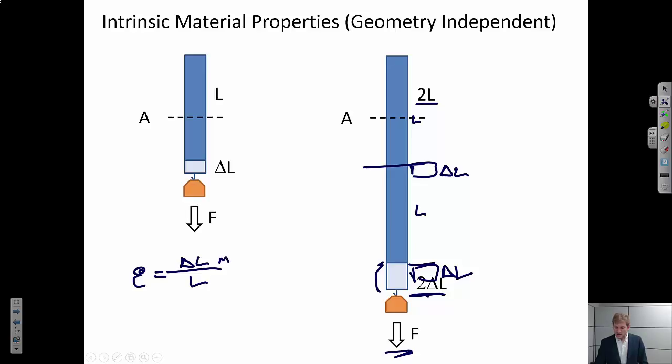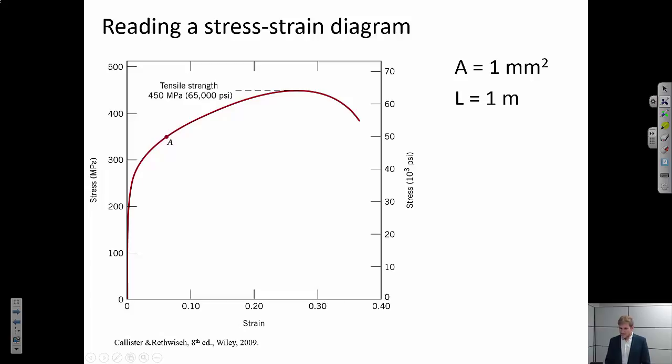And so rather than talking about elongation, usually what we talk about is strain. And strain is defined as the elongation over the original length. And so this is unitless. So delta L could be in meters, but the original length would also be in meters. And so those would cancel out. So strain is unitless, although sometimes you will see units of length per length, meter per meter for example.